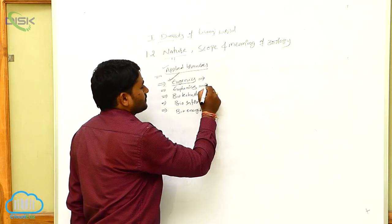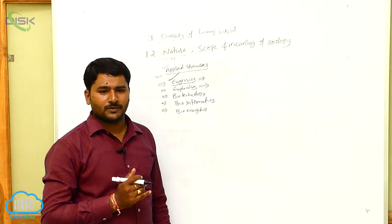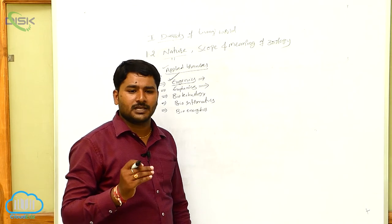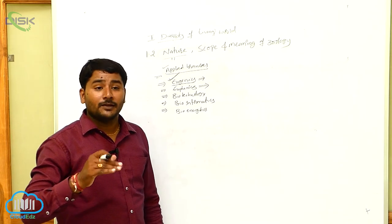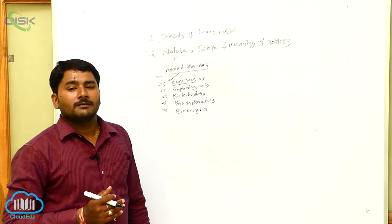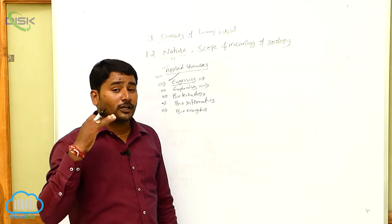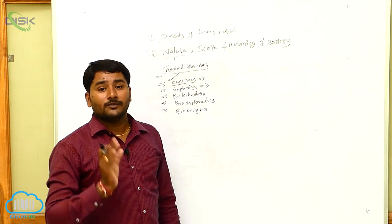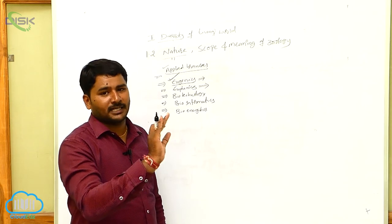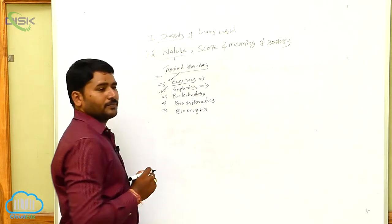Next is Euthenics, which is also a branch of genetics. It is the application of genetics principles for phenotypical changes and treatment of human beings. If any phenotypic characters are damaged in individuals, using genetics knowledge for such phenotypical treatment is called Euthenics.